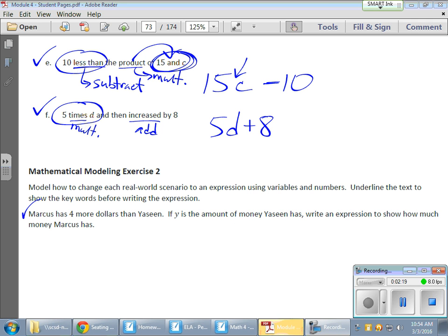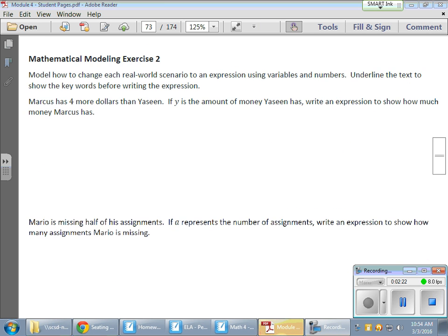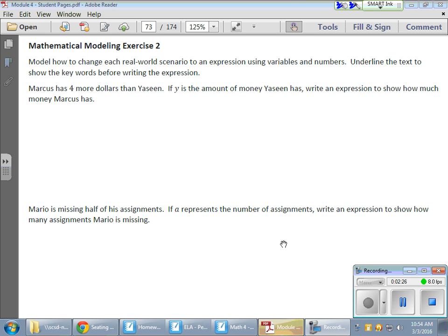And then we're going to deal with, or we've dealt with today, some real-world situations here, like Marcus. He has 4 more dollars than Yaseen. If Y is the amount of money Yaseen has, write an expression to show how much money Marcus has. Well, if Marcus has 4 more dollars, I'm going to underline the more dollars than, because that is an add. One having something more than another, typically that's an add. In this case, he has 4 more dollars than Yaseen. Now we have a variable being introduced here. Y is the amount of money Yaseen has. So I'm going to take the Y and just put it above Yaseen, showing that that Y is represented by him.